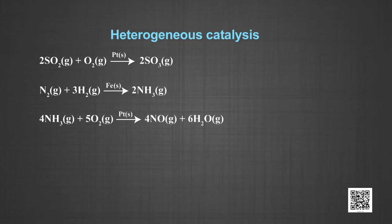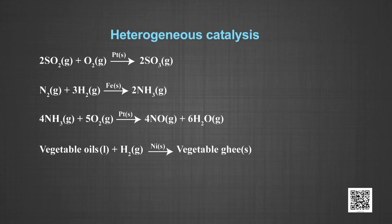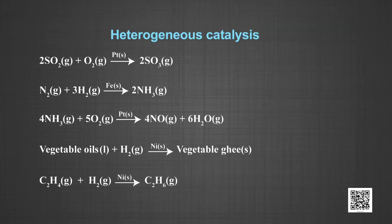Number three: oxidation of ammonia into nitric oxide in the presence of platinum gauze in Oswald's process — the reactants are in the gaseous state while the catalyst is in the solid state. Number four: hydrogenation of vegetable oils in the presence of finely divided nickel as catalyst. Vegetable oils react with dihydrogen in the presence of nickel to yield vegetable ghee. In this case, the reactants are in liquid and gaseous states, but the catalyst is in the solid state.